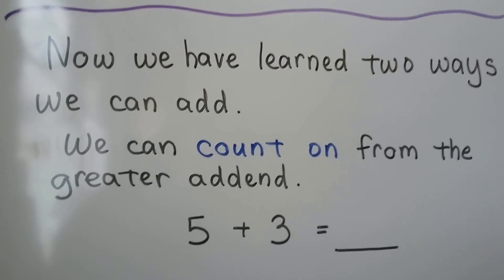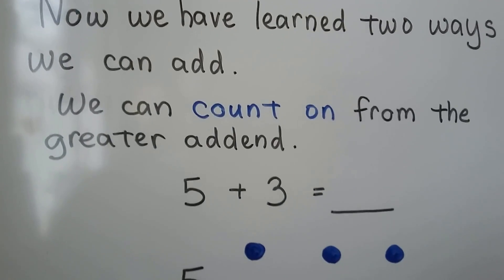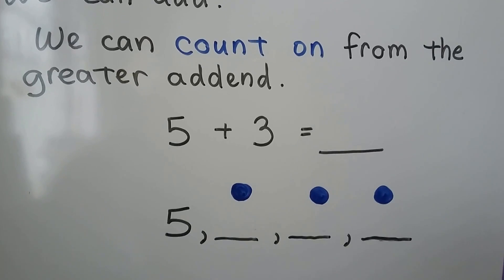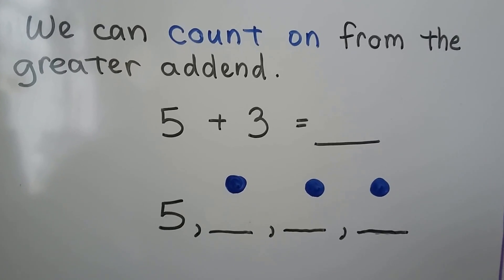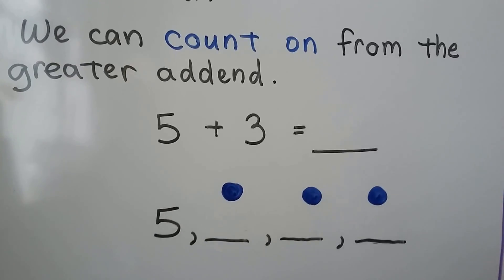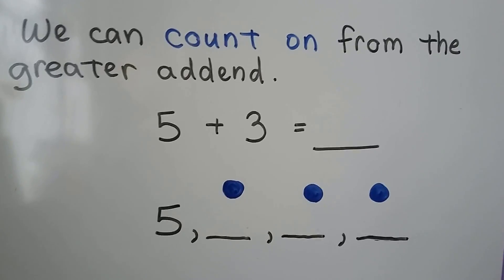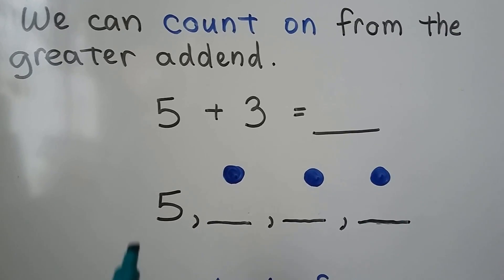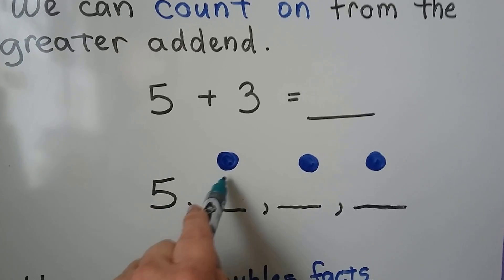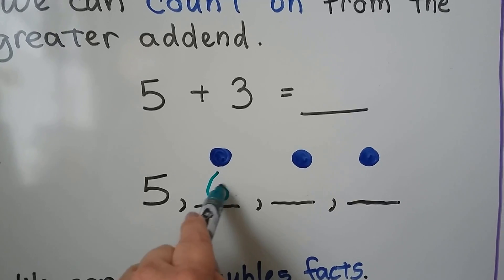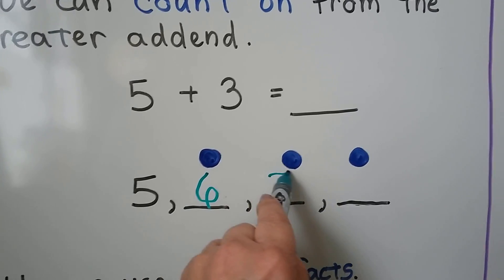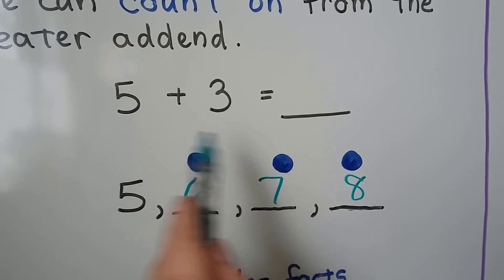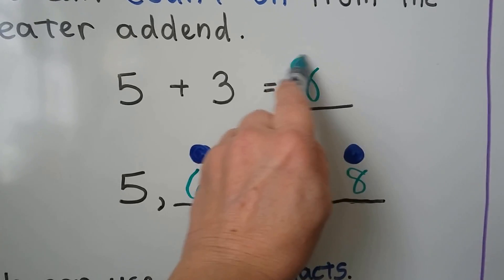We now have learned two ways we can add. We can count on from the greater addend. For five plus three, five is the greater addend. We can count on: one, two, three — five, six, seven, eight. Five plus three is equal to eight.